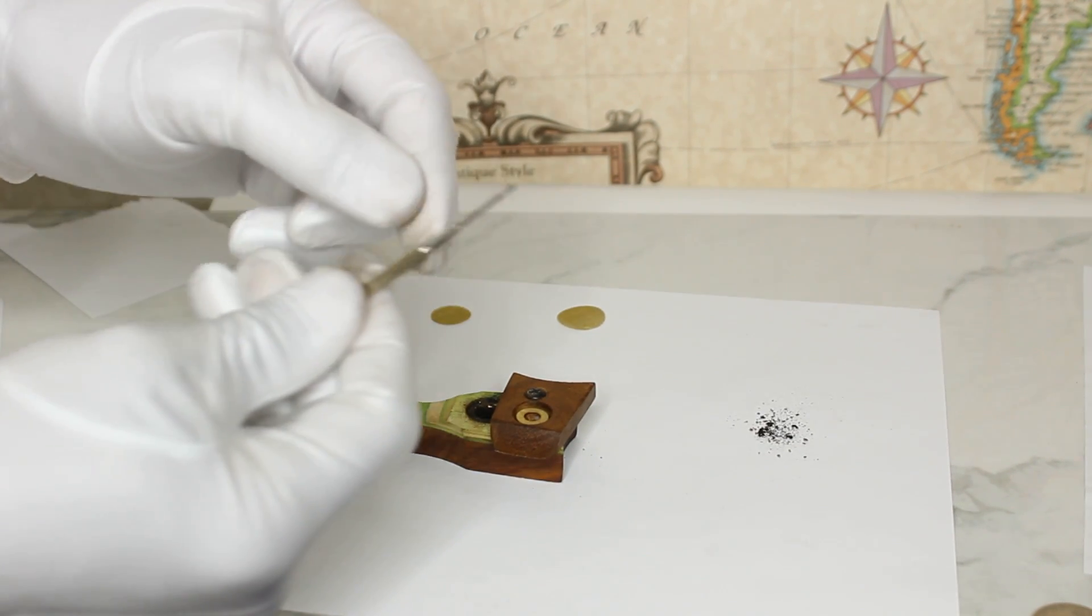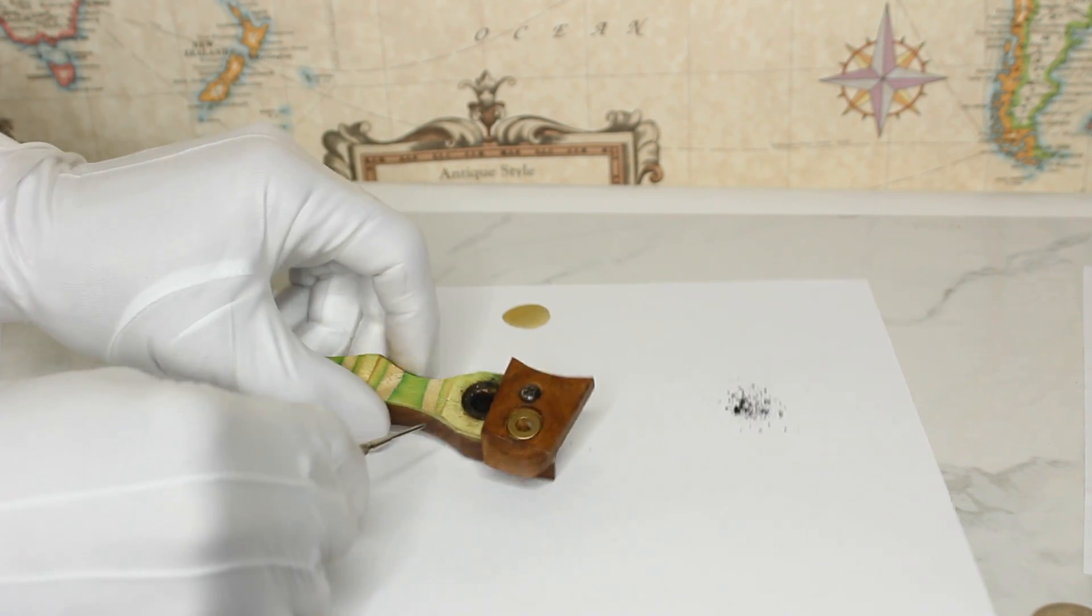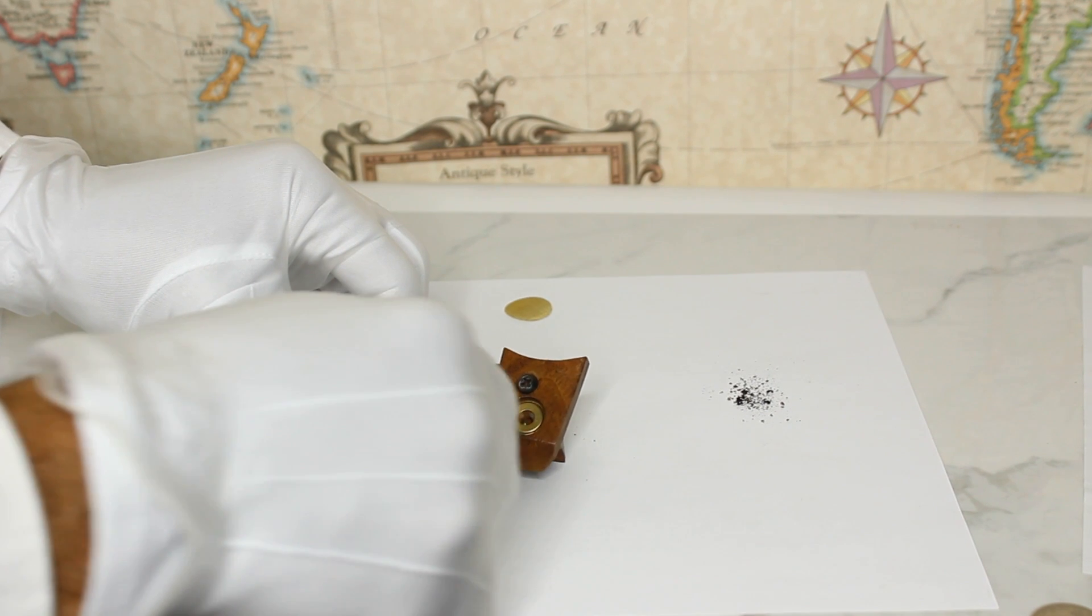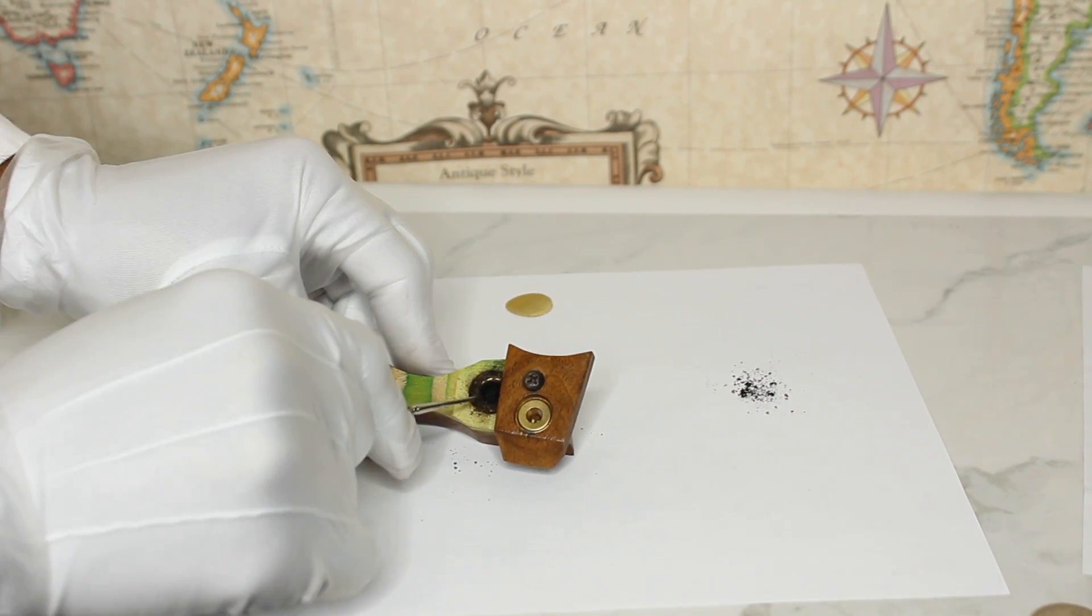Okay, and what you want to do is use something like this with a flat edge, a little screwdriver flat edge like that, so that you can get underneath this little lip here. So get underneath that lip here around the side. There you go.